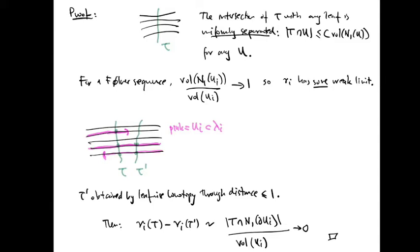Why should this be true? Well, for each fixed transversal tau, the intersection of tau with any leaf is uniformly separated. This means we can control the number of intersections of tau with any sub-manifold U in terms of the volume of a neighborhood of U. The reason for this is that tau cannot intersect any given leaf in points which are too close together, or it would not be a transversal.